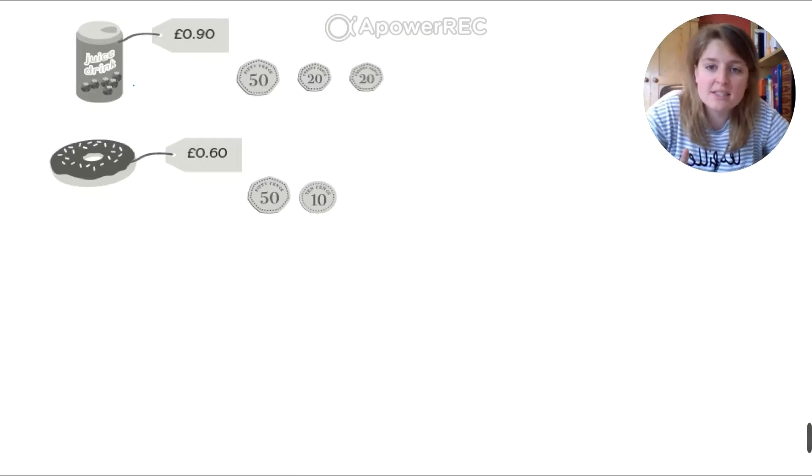So the thing we've got here, we can see we've got 90p for a juice drink and 60p for a donut. If I go to the shops and I want to buy both of these, I need to know how much they're going to cost all together. So we line up our numbers.